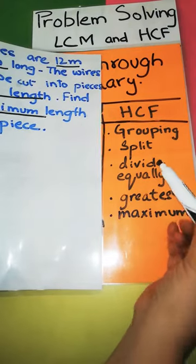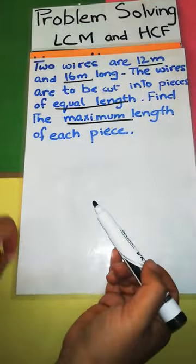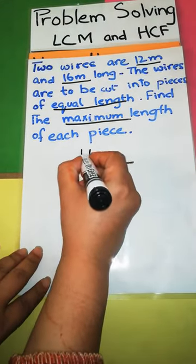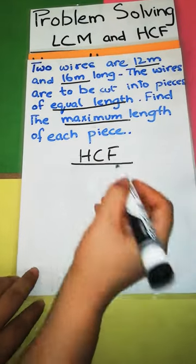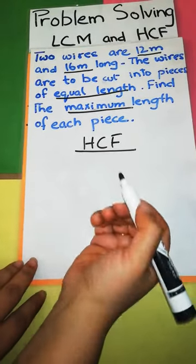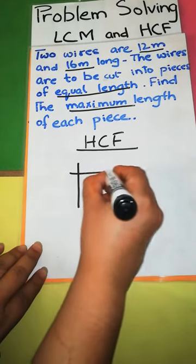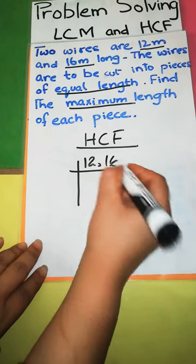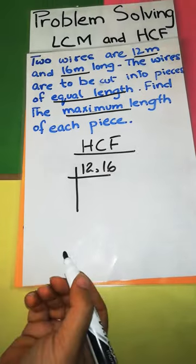So, equally, divided equally and the greatest length. Okay, these are the two hints through which we came to know that this is an HCF word problem. Once you have identified, now you can take out the HCF very easily using the division method or the product of prime factorization method as I have explained in my earlier videos. Let's have a look at another question.